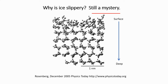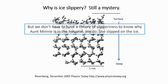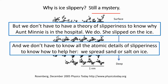What changes or how it changes is still quite uncertain. At the moment, we simply have to accept that slipperiness seems to be an intrinsic property of ice. Notice, however, that we don't have to have a theory of slipperiness to know why Aunt Minnie is in the hospital — she slipped on the ice. And we don't have to know all of the atomic details of slipperiness to know how to help her in the future: we'll spread sand or salt on the ice.